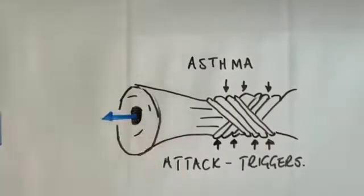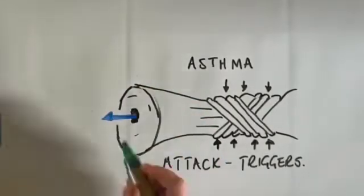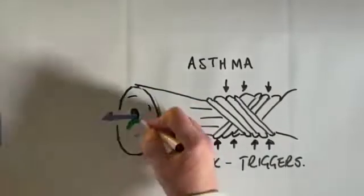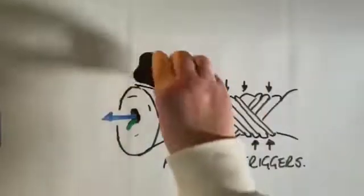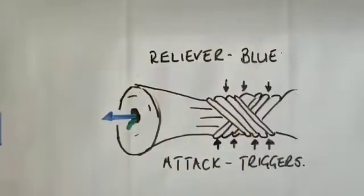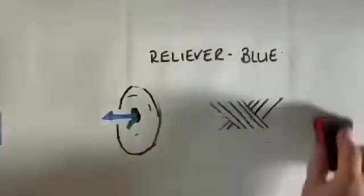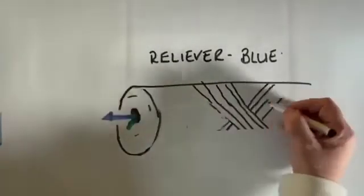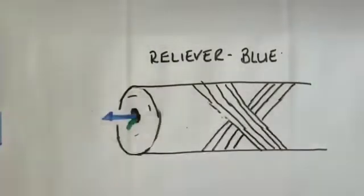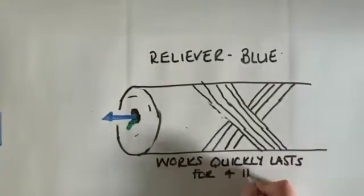To control asthma, use inhalers. When your muscles tighten, you can use a reliever inhaler which is usually blue. This works quickly but only lasts a few hours.